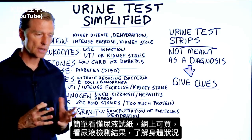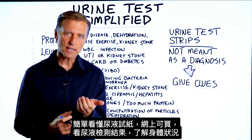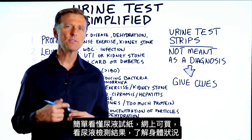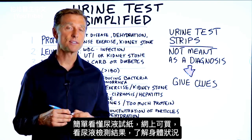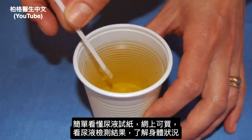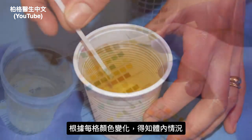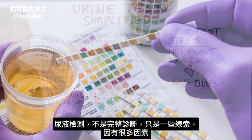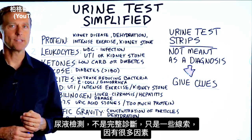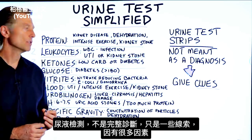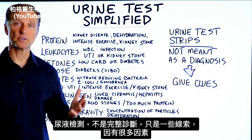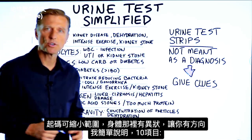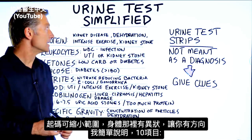I want to teach you very simply how to read these little urine test strips. You can buy them online and they will give you some general information on what's going on inside your body just by exposing them to urine. These different little parts change different colors and you can get different ideas on what's going on. These urine test strips are not meant as a full diagnosis — they're just going to give you clues, but at least they'll narrow things down if there's something that is not normal.